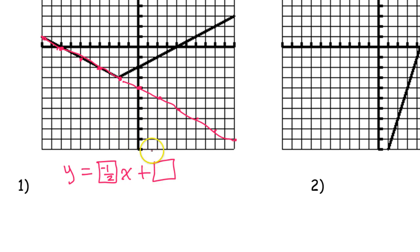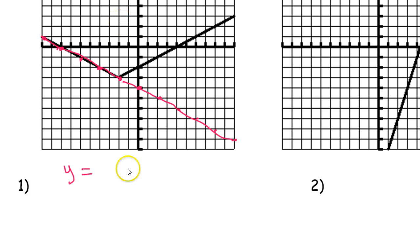That's the slope. Now the y-intercept — we can see that if I continue this line, it would hit the y-axis right here. Counting down: negative 1, 2, 3, 4. So this would be negative 4. I'm going to write negative 1 half x minus 4 instead of plus negative 4. So we have negative 1 half x minus 4. That's the equation of the left-hand side of the absolute value function.